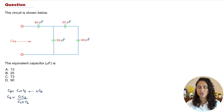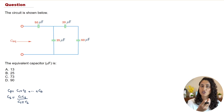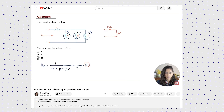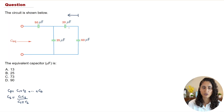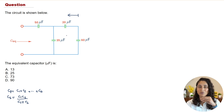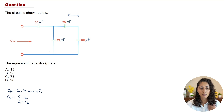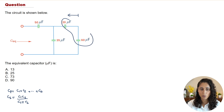Now let's determine which capacitors are in series and which are in parallel. When given a circuit to find the equivalent, always start from one end — just like in the previous example. Look at which capacitors are in series and which are in parallel, find the equivalent for those, then redraw the circuit with that new equivalent capacitor. Keep doing that until you reach the end. This approach helps you avoid mistakes, so let's start with the 20 and 60 µF capacitors, which are in series.